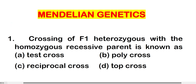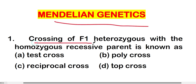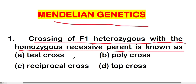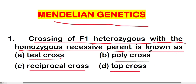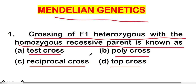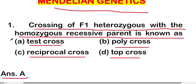Hello friends, welcome back to a new video on MCQs on Mendelian genetics — this is the first part of this series. The first question is: crossing of F1 heterozygous with the homozygous recessive parent is known as — option A: test cross, option B: polycross, option C: reciprocal cross, or option D: top cross. The right answer is option A, test cross.